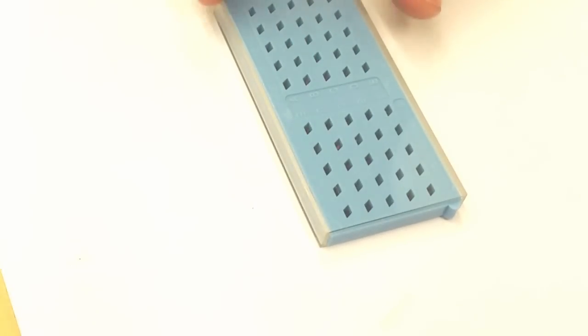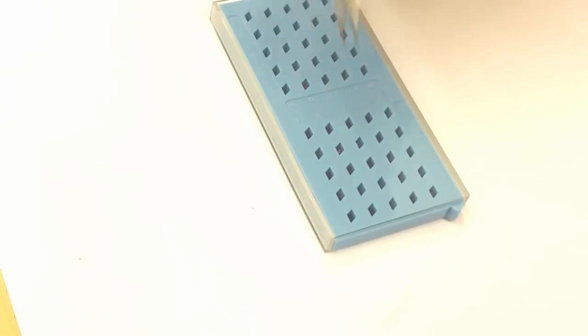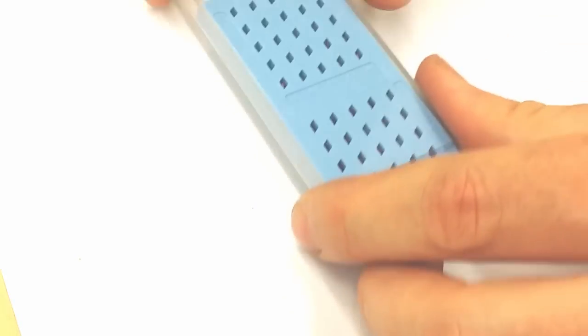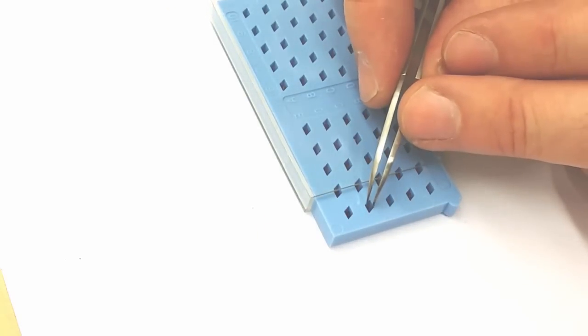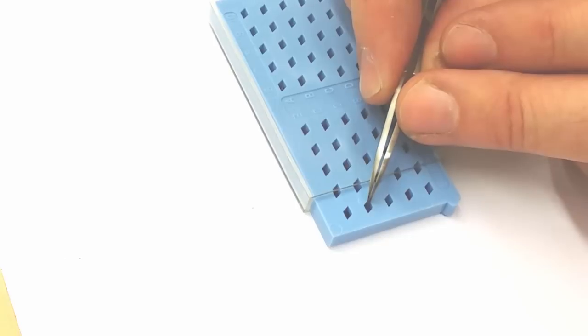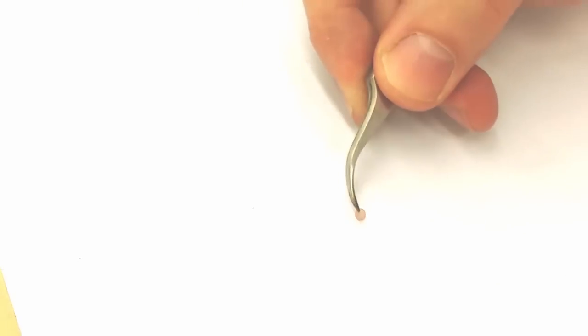When you do TEM analysis, you usually put your samples on small metallic grids. And these grids you buy and they usually come in a box that looks like this. So here you have several small holes and in each hole there is a small little of these metallic grids. If you open the box then you can pick up one of these and then you can see that it looks sort of like this. Very very very tiny little dish that this dish is sort of 3 mm across.